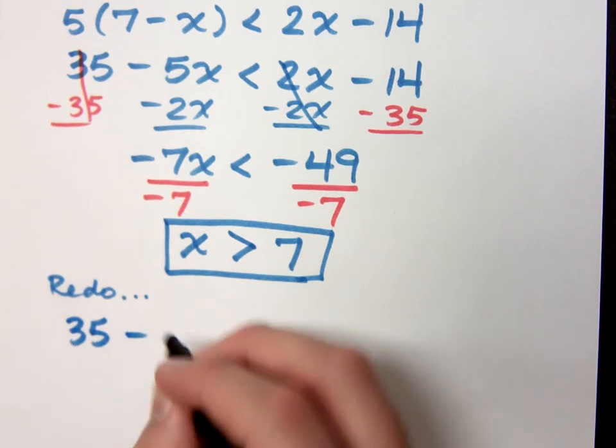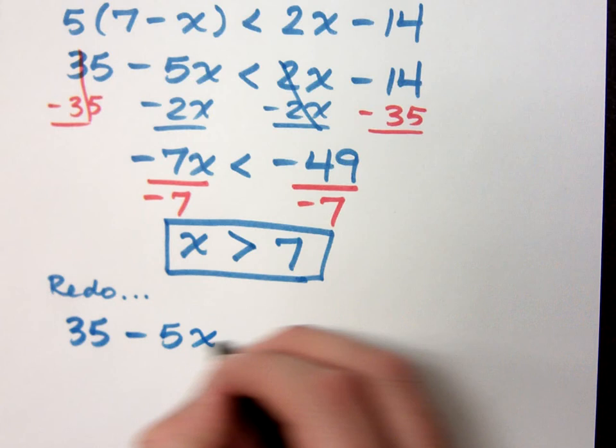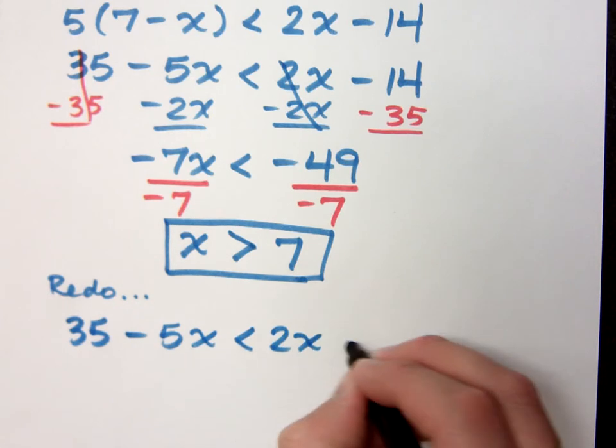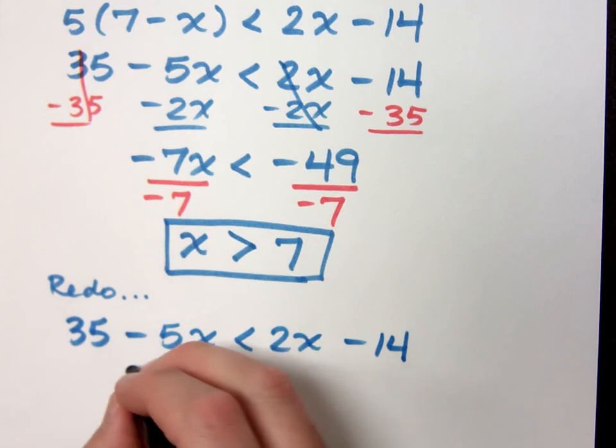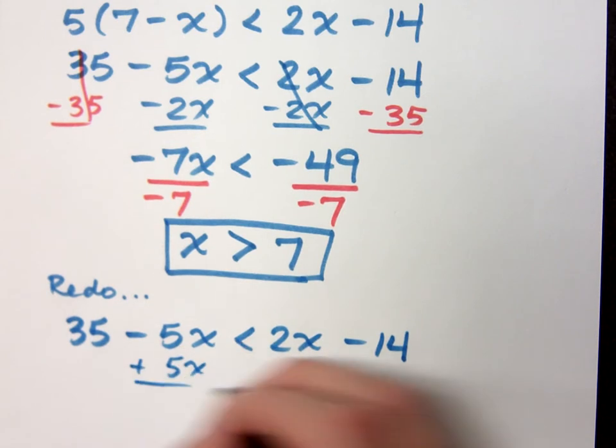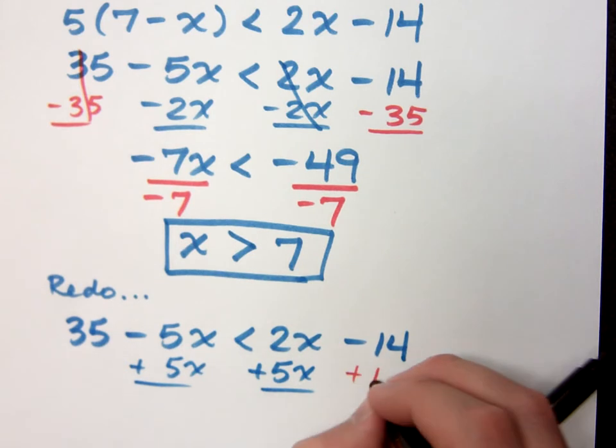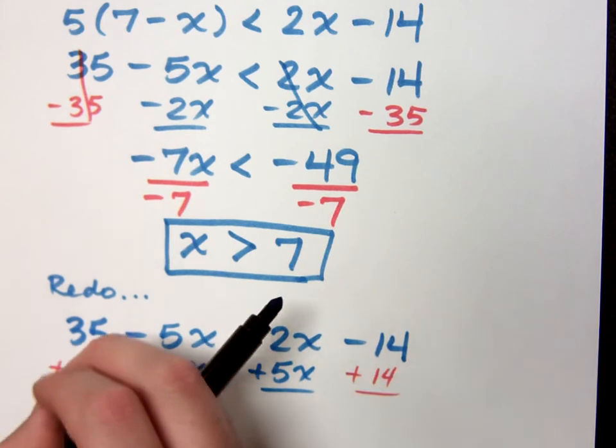So let me start at that second step. 35 minus 5x is less than 2x minus 14. So in this case, let's move the 5x to the right by adding 5x to both sides. And we're going to add 14 to move the constant to the left.